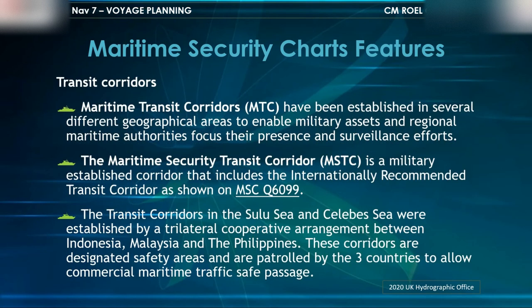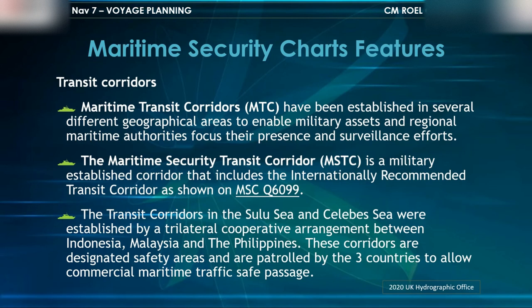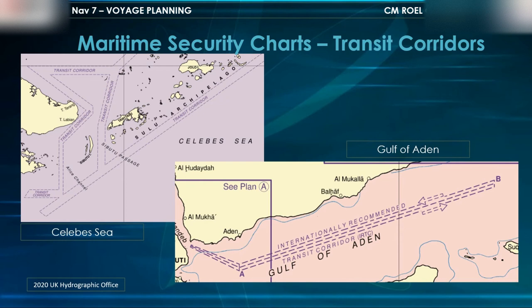Maritime Transit Corridors or MTCs have been established in several geographical areas to enable military assets and regional maritime authorities to focus their presence and surveillance efforts. The Maritime Security Transit Corridor or MSTC is a military-established corridor that includes the internationally recommended transit corridor as shown on MSC Q6099. The transit corridors in the Sulu and Celebes Sea were established by a trilateral cooperative arrangement between Indonesia, Malaysia, and the Philippines, designated as safety areas patrolled by the three countries to allow commercial maritime traffic safe passage.